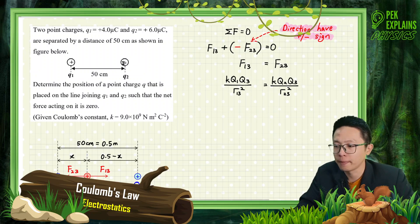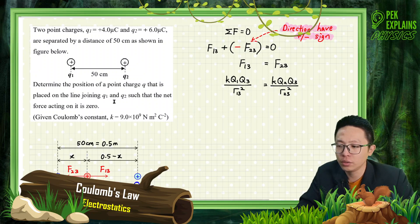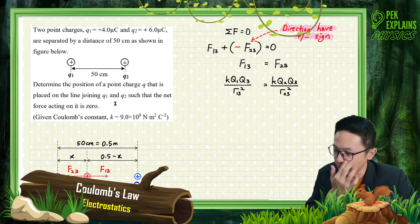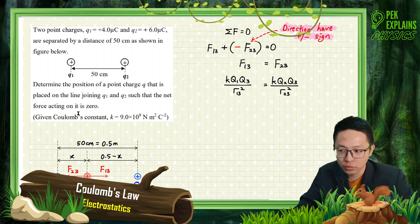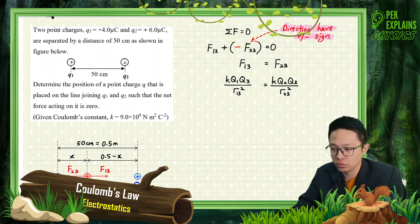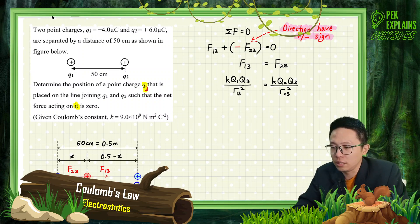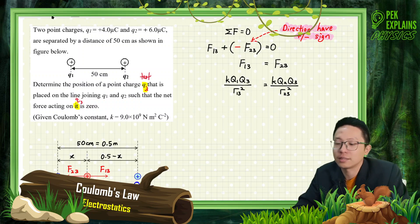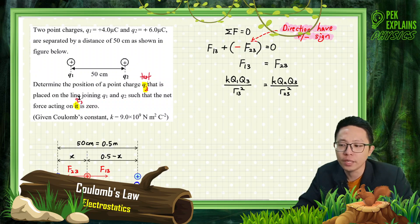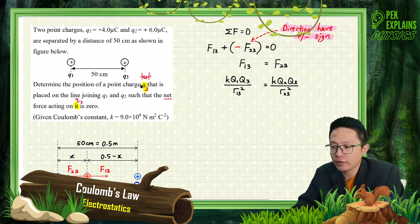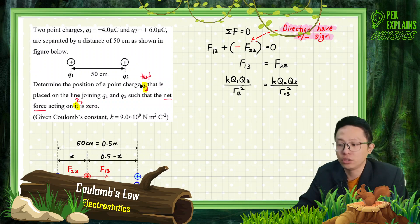Both are positive charges. Determine the position of a point charge Q that is placed on the line joining Q1 and Q2 such that the net force acting on it is 0. We can take this as Q3. The net force acting on Q3 is 0, so Q3 is the test charge.